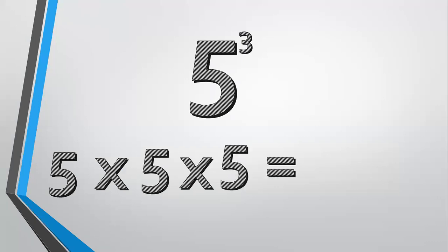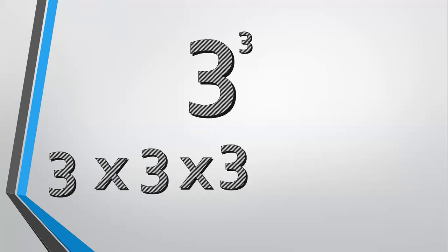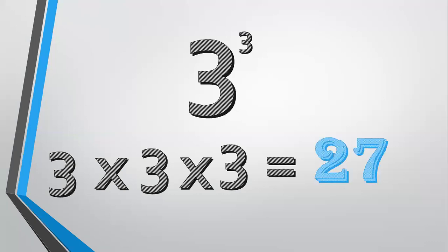5 cube means 5 times 5 times 5, which equals 125. 3 cube means 3 times 3 times 3. 3 times 3 equals 9, and 9 times 3 equals 27.